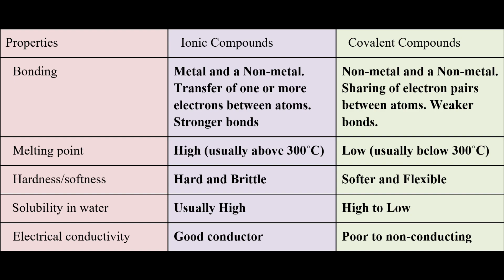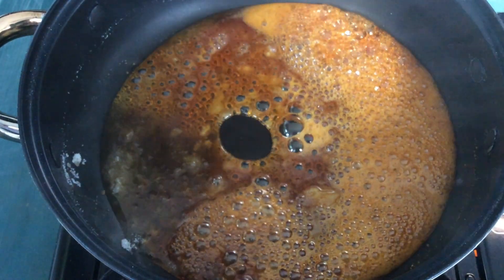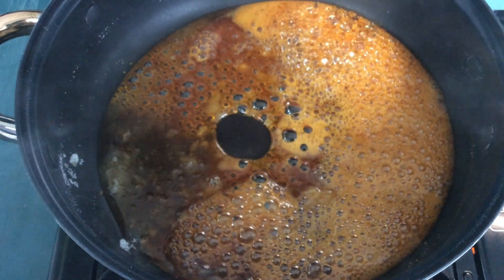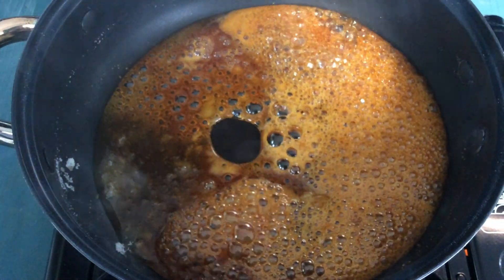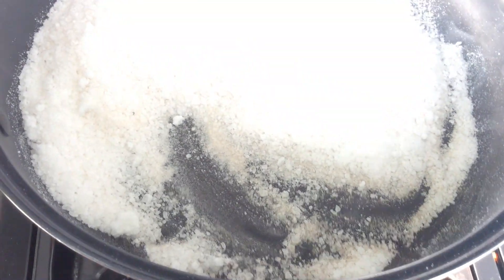For solubility in water, ionic compounds are usually highly soluble, while covalent compounds range from high to low. For electrical conductivity, ionic compounds are good conductors, while covalent compounds are poor to non-conducting. Based on these properties, we can now classify our substances: sugar has a low melting point, so it is a covalent compound; salt did not melt easily, so it is an ionic compound.